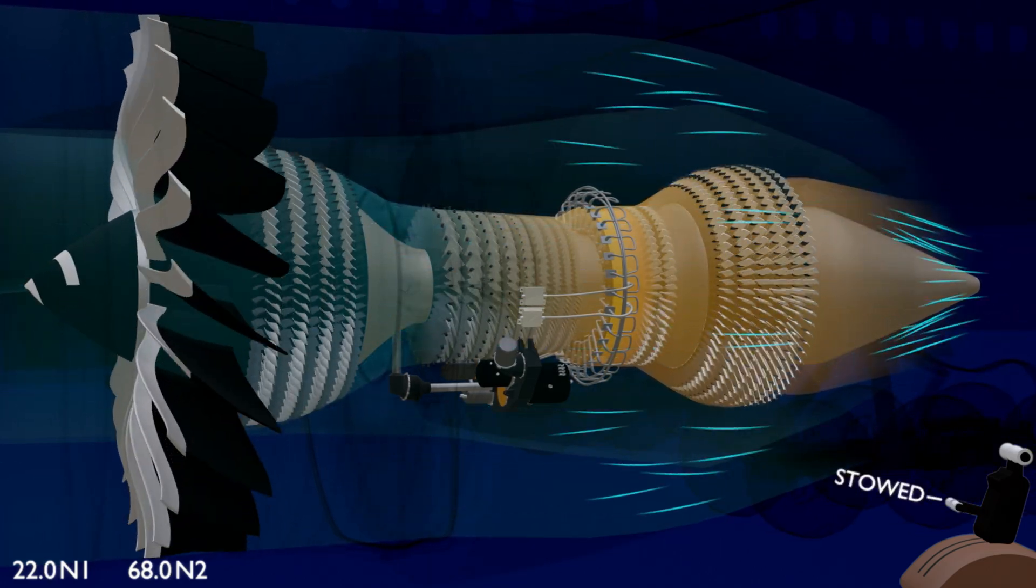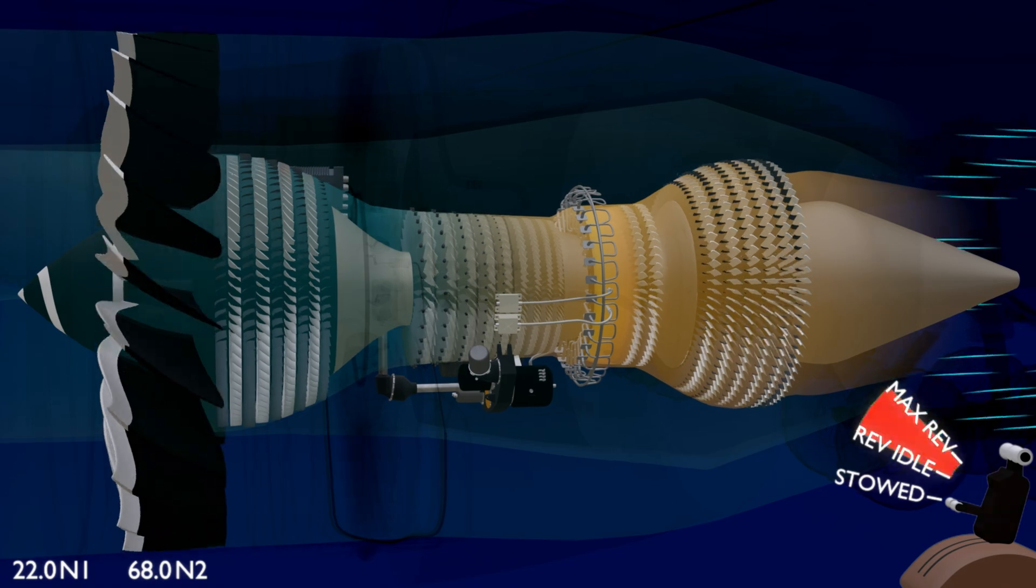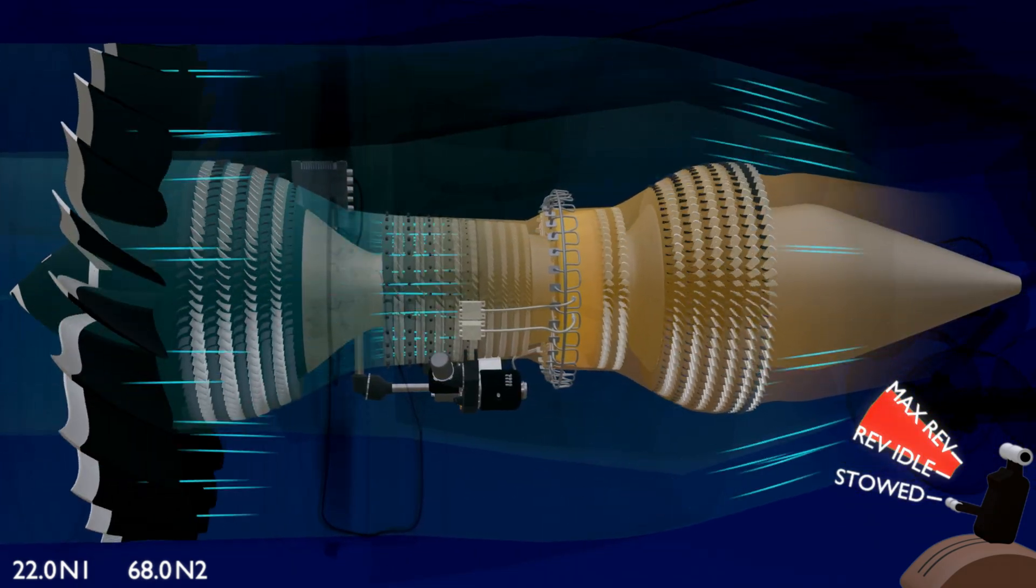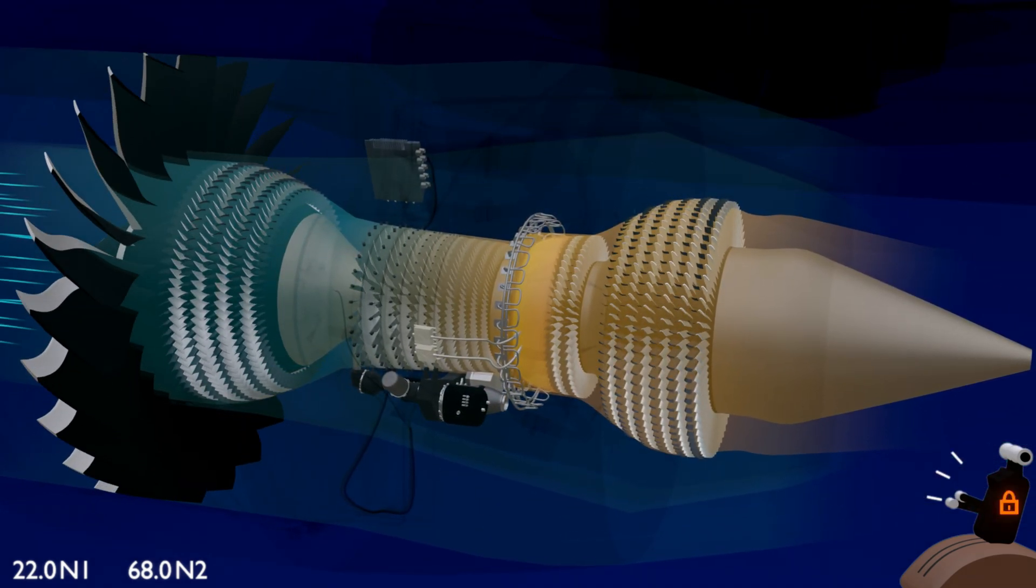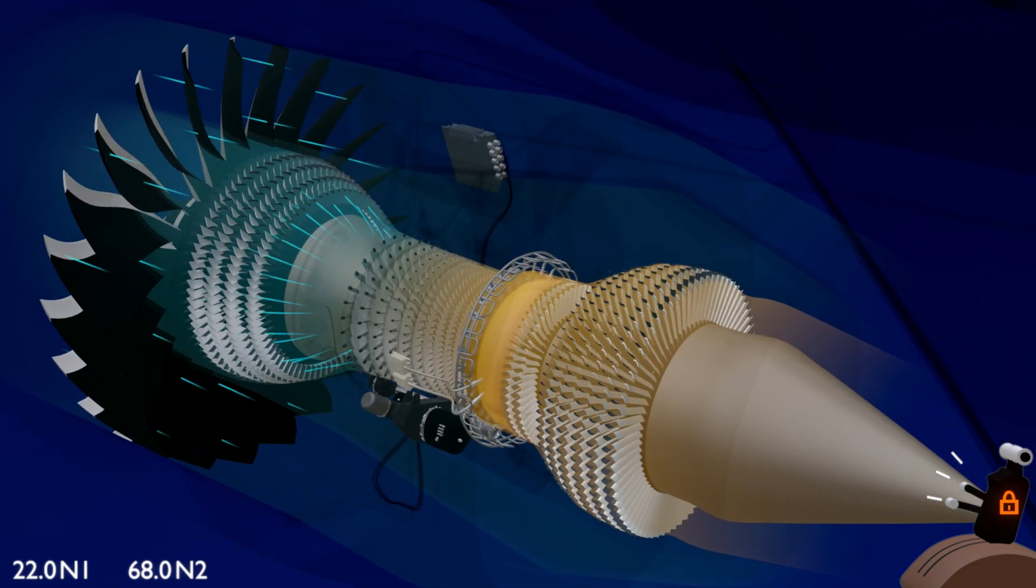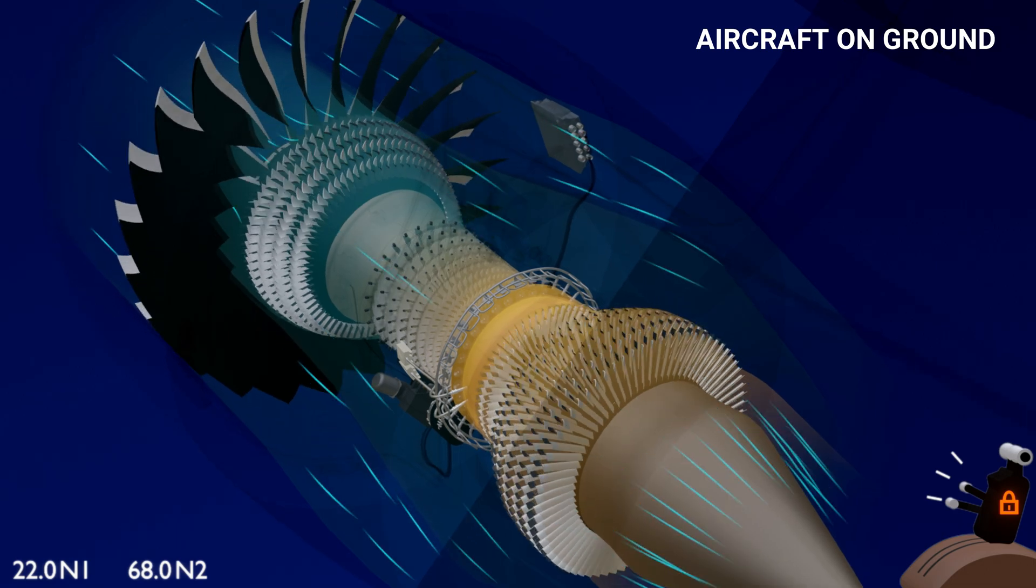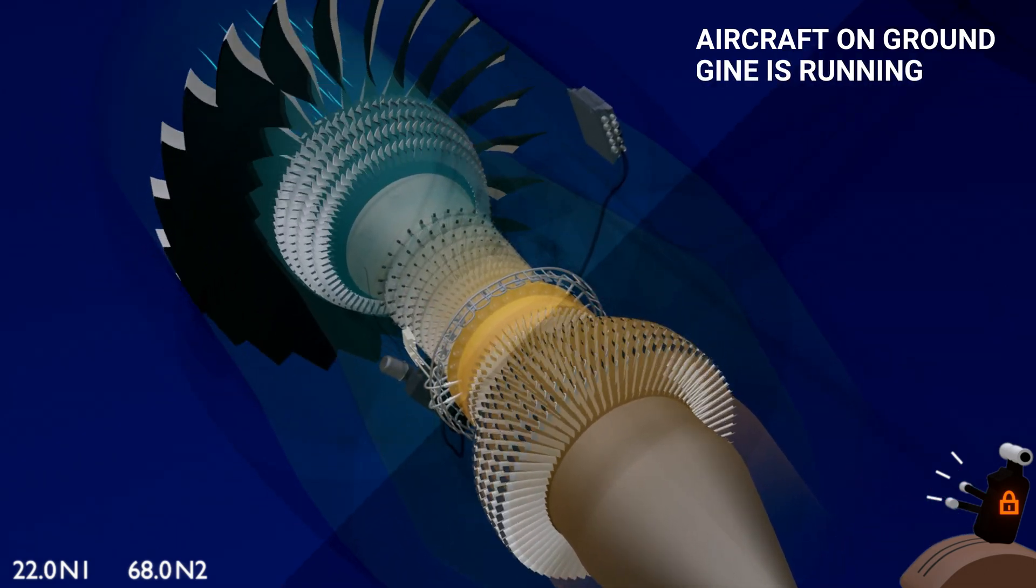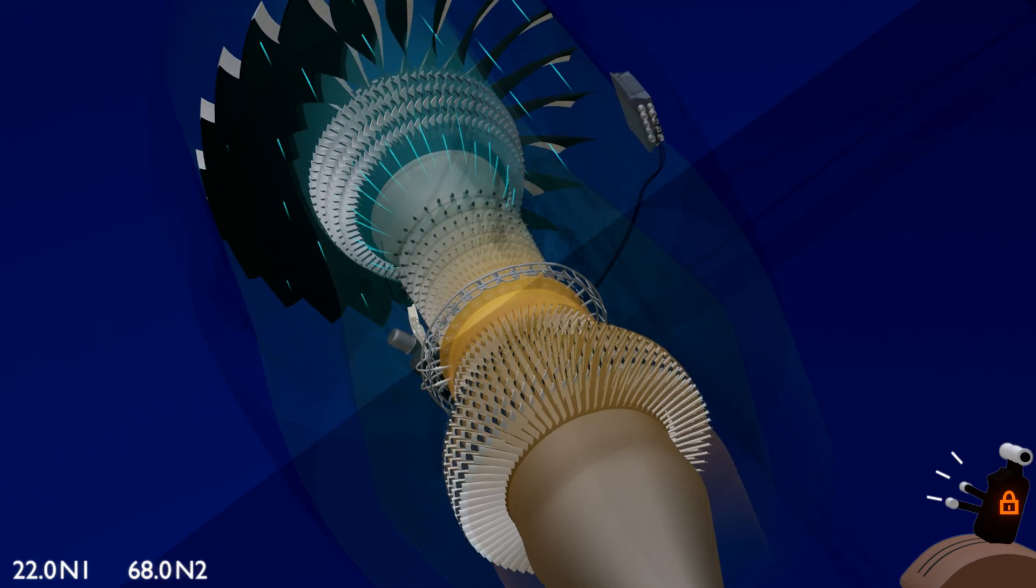The lever has two detent positions: reverse idle and maximum reverse. The lever cannot be put ahead of the reverse idle position until the reverser is completely deployed. Putting the lever to reverse idle position sends signal to the EEC to operate the engine thrust reverser. The EEC operates the thrust reverser when the aircraft is on ground, the engine is running, and the forward thrust lever is at idle. Once all conditions are satisfactory.